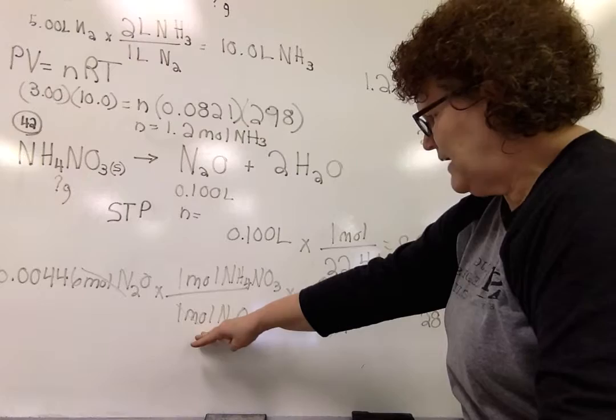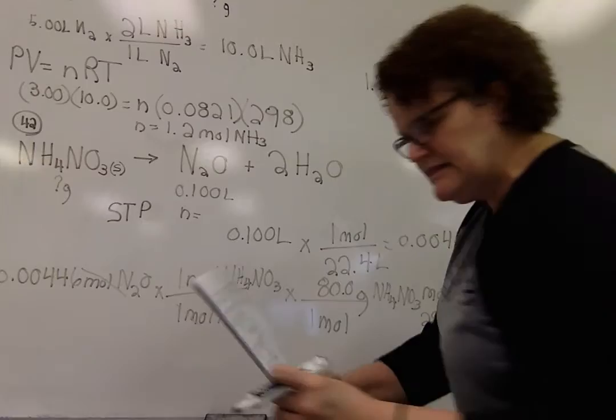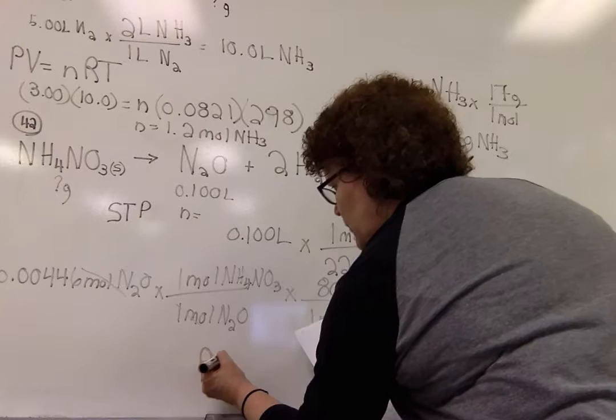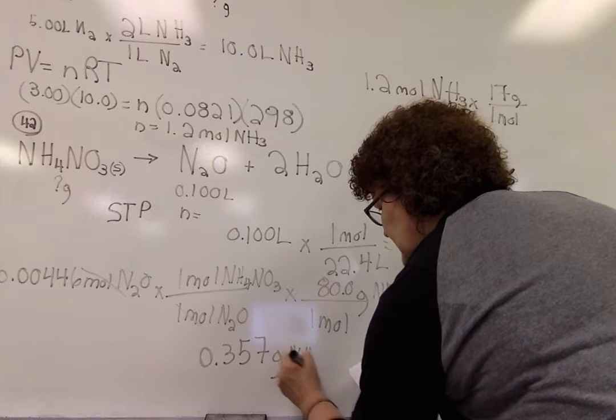So now we're going to pick up our calculators and say 0.00446 times 1 divided by 1 times 80 divided by 1 to get us our number of grams of the ammonium nitrate. And when we do that, I think, if I've done my calculation correct, you can check it there for yourself. 0.357 grams of NH4NO3.